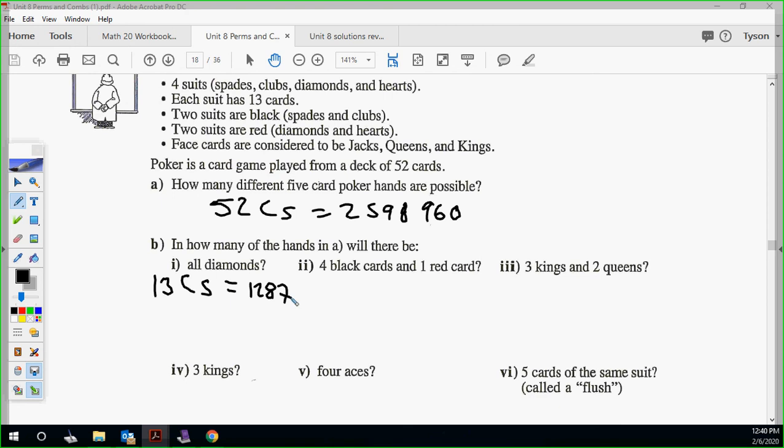Four black cards and one red card. How many black cards are there? 26. So we want to go 26C4 times 26C1. And you can see this is more common, which makes sense. That's why it's a worthless hand. Having four reds and a black doesn't mean anything in poker.